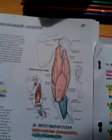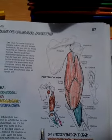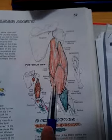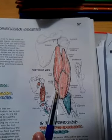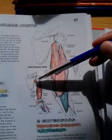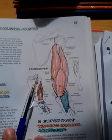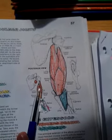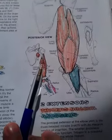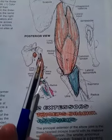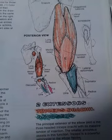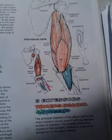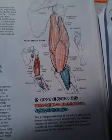Now we have the dorsal group, which has only one muscle: the triceps. The triceps has three heads. The long head originates on the infraglenoid tubercle. The lateral and medial heads originate on the dorsal surface of the humerus. They all insert on the olecranon of the ulna, and the function is extension of the forearm.